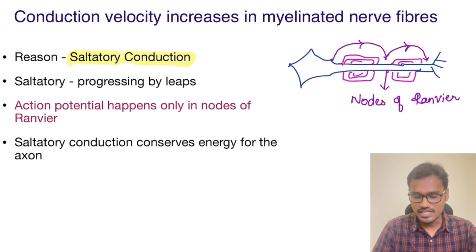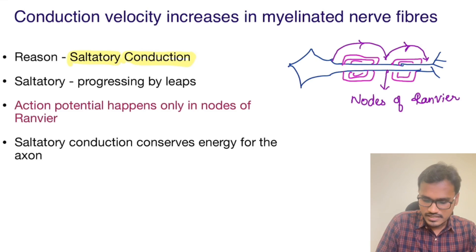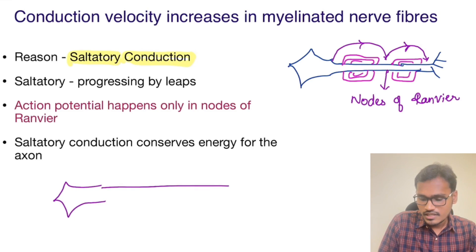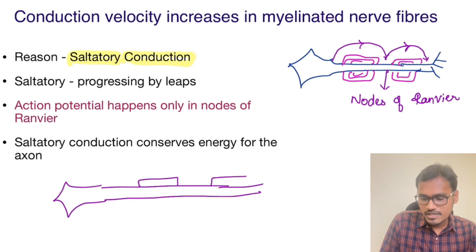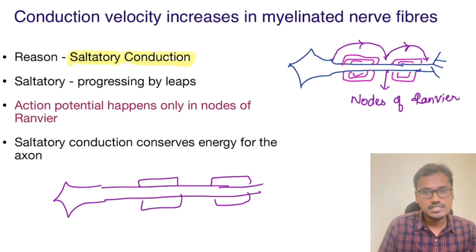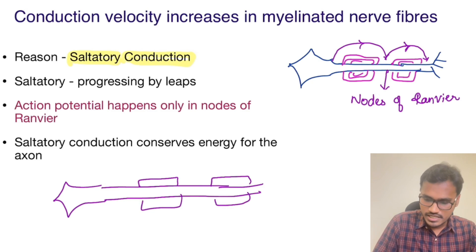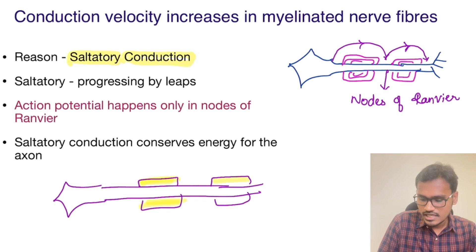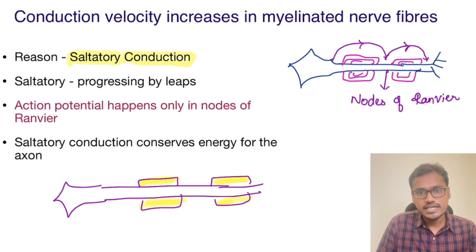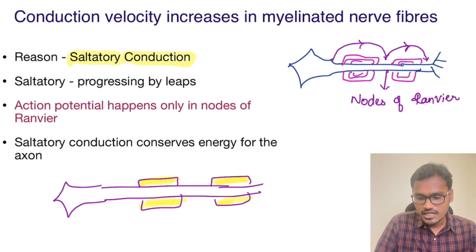Suppose in this neuron, this part is having myelination and this part is having myelination. These are myelinated areas — I'll highlight them. These myelinated areas are impermeable to ions; there is no ionic transmission through them and they are not going to allow ionic transmission.